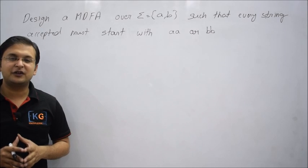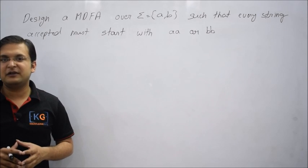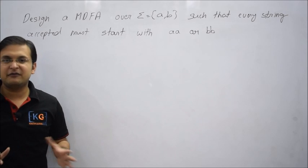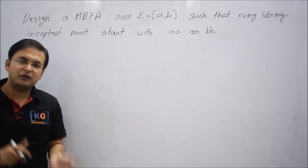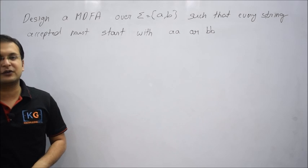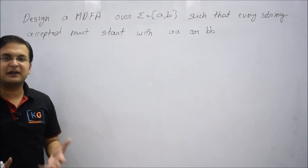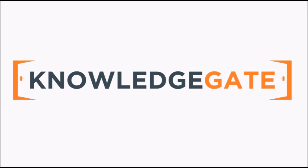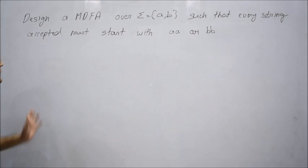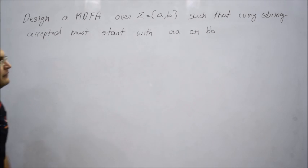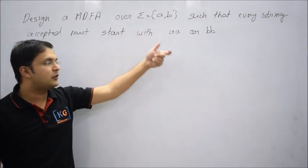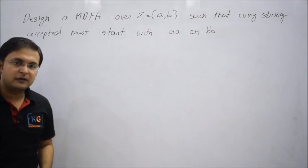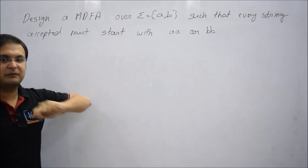Hello friends. In this series of videos on theory of computation, we are dealing with how to design a DFA. We have tried a number of problems starting with 'so and so', containing a substring, ending with 'so and so'. Now let's try a more complex case where we can have more than two conditions in starting.